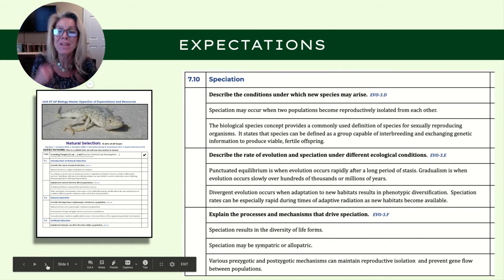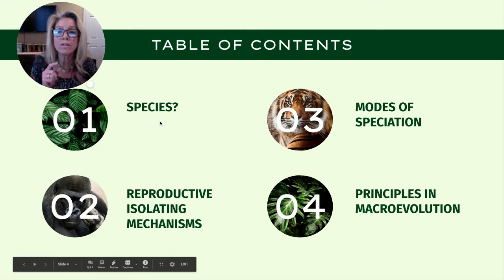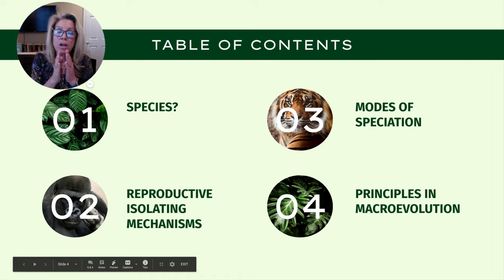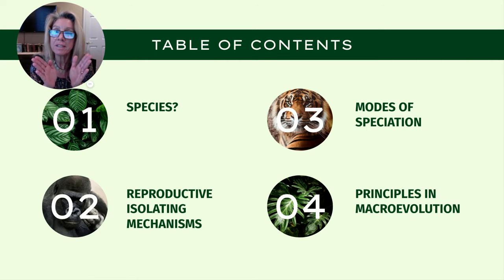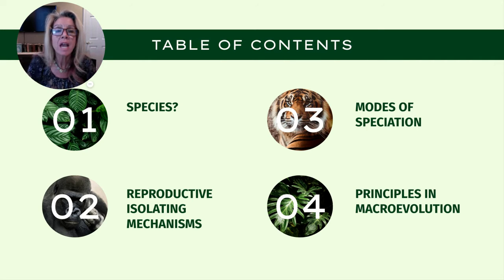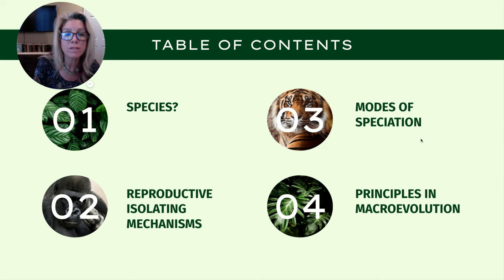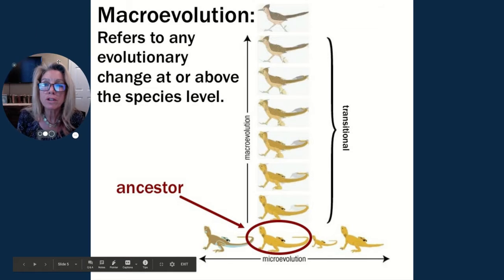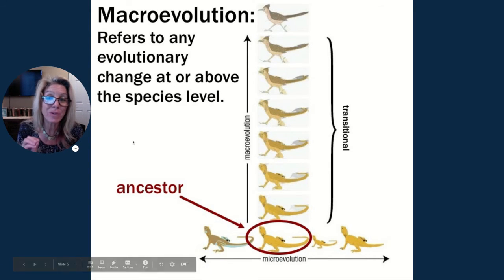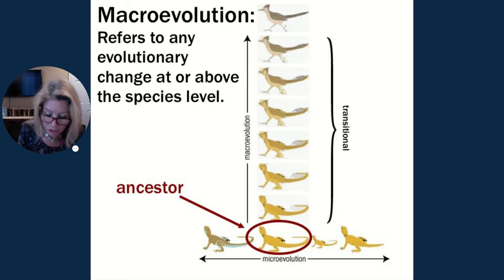Here are the expectations of what you should know as a result of discussing speciation. We'll define what a species is, then talk about the reproductive isolating mechanisms — what can cause one species to become two species, what can isolate them and maintain that isolation. In my second video I'll talk about modes of speciation and principles in macro evolution.